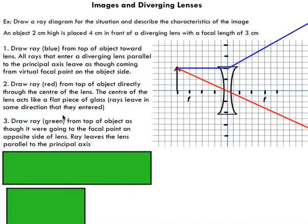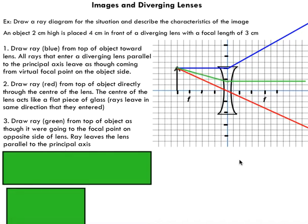For the third ray — the green ray — start at the top of the object and aim it as though it were going to the focal point on the opposite side of the lens. Instead of actually reaching that focal point, the light is refracted so it leaves the lens parallel to the principal axis. These are called diverging lenses for a reason: the rays of light diverge and don't converge into the focal point — they actually move away from it.